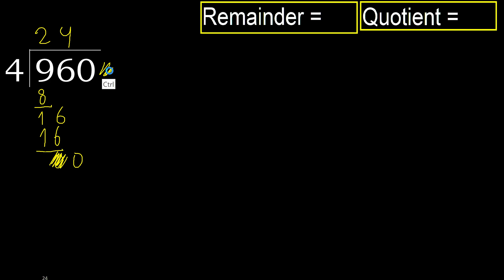That is not a number, therefore finish it. The division is complete — always complete with 0. Complete because here we finish it with this number.